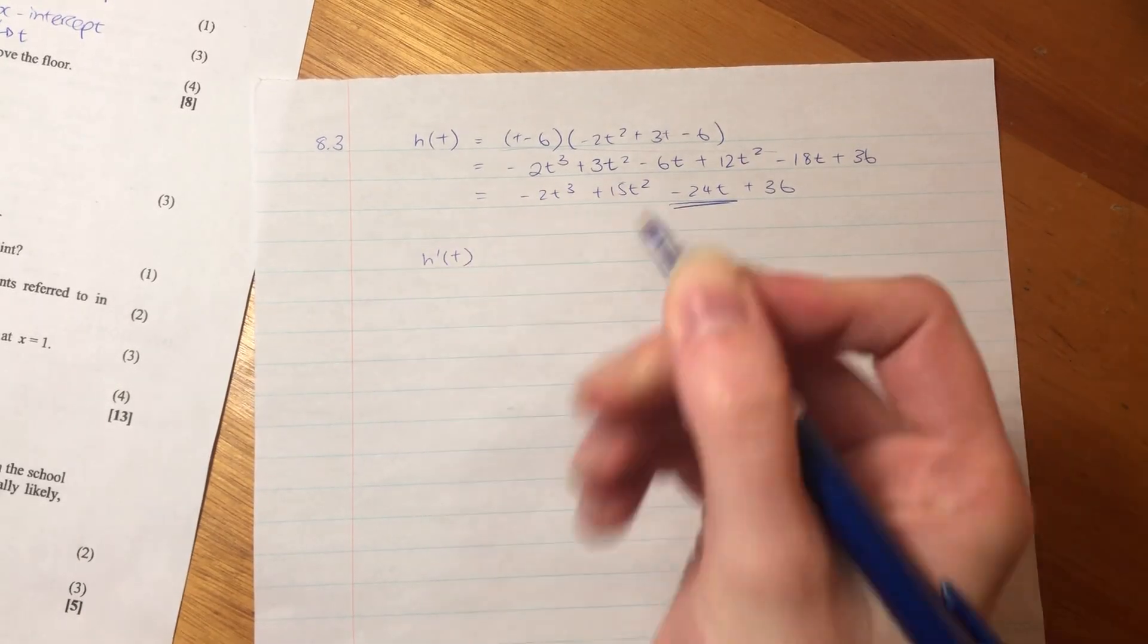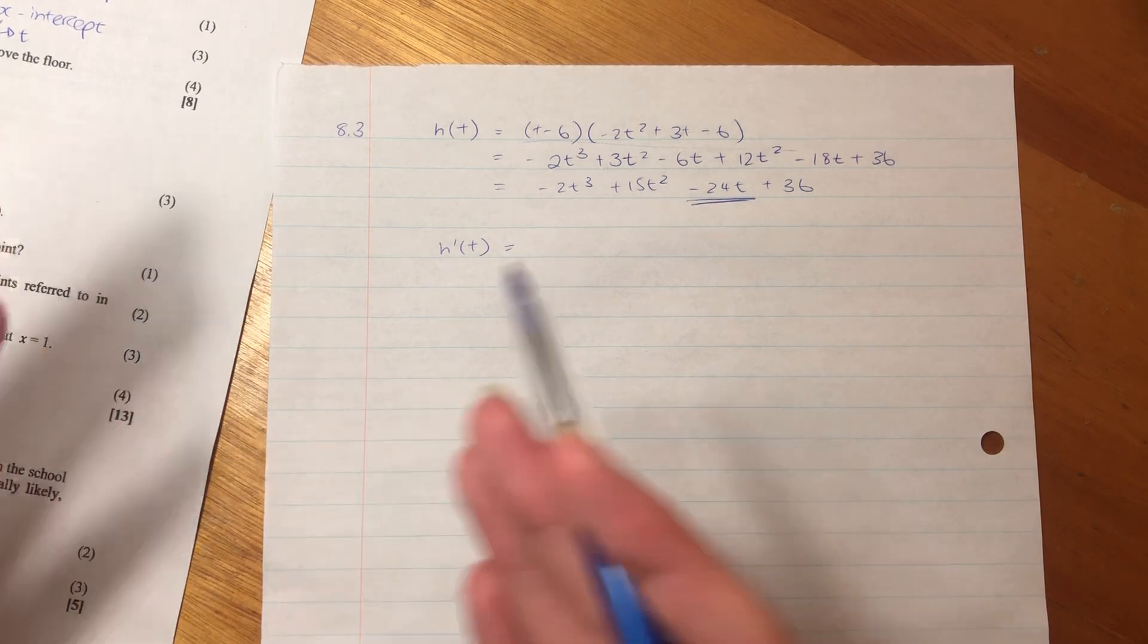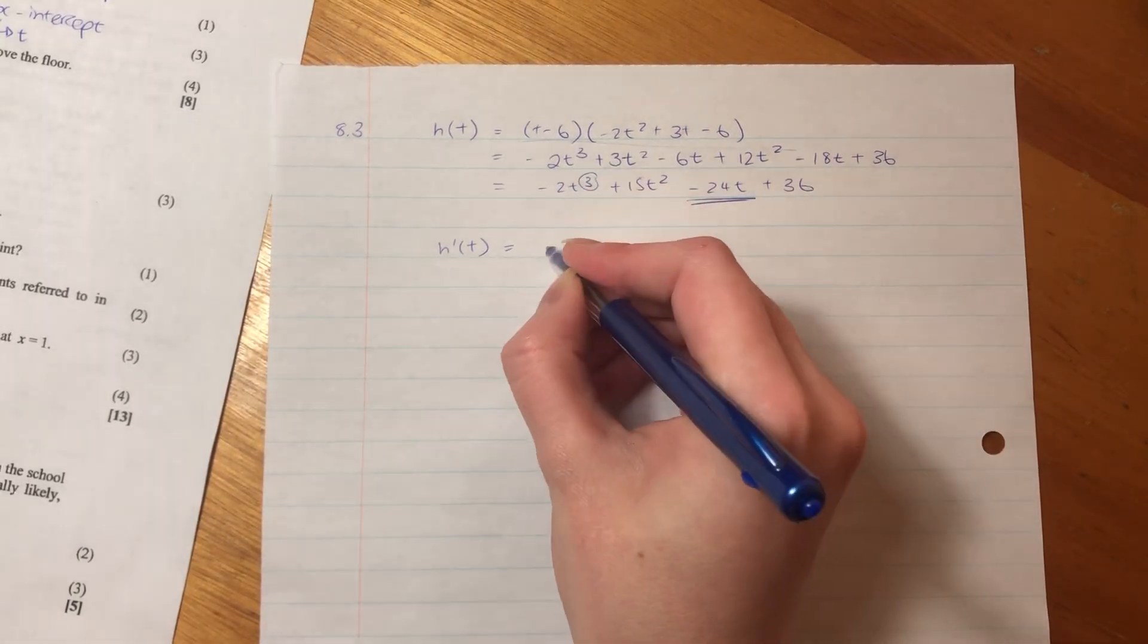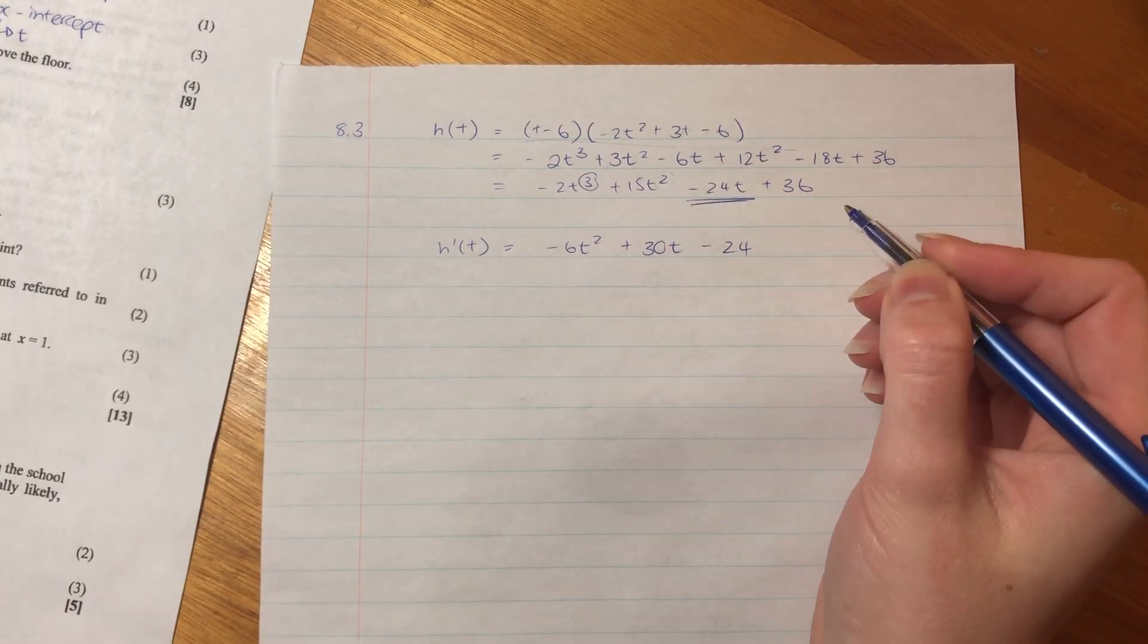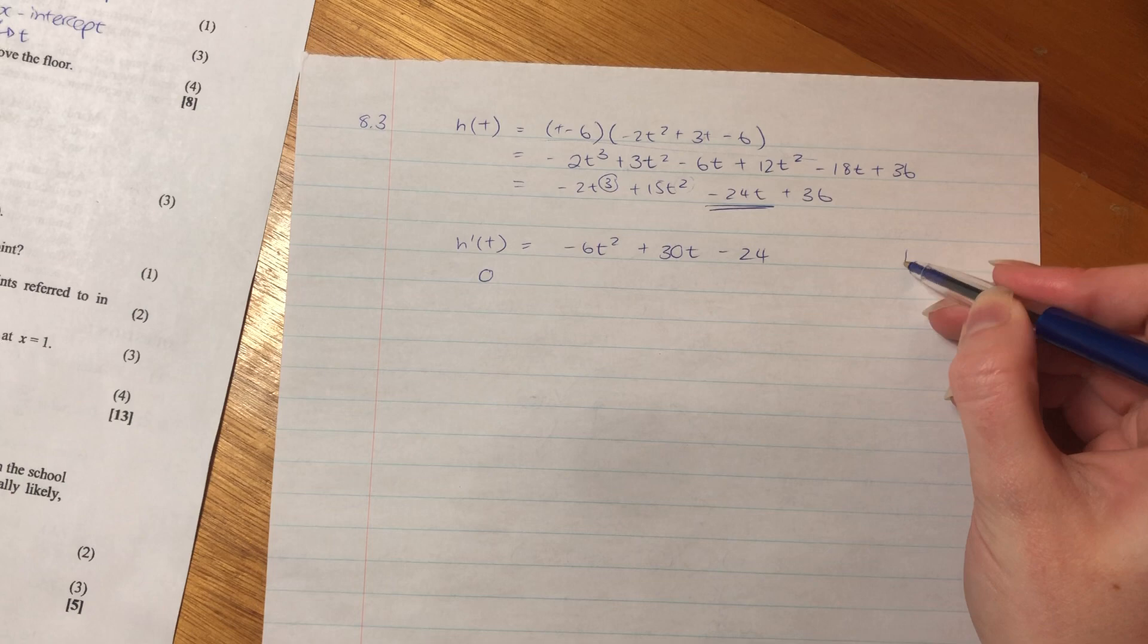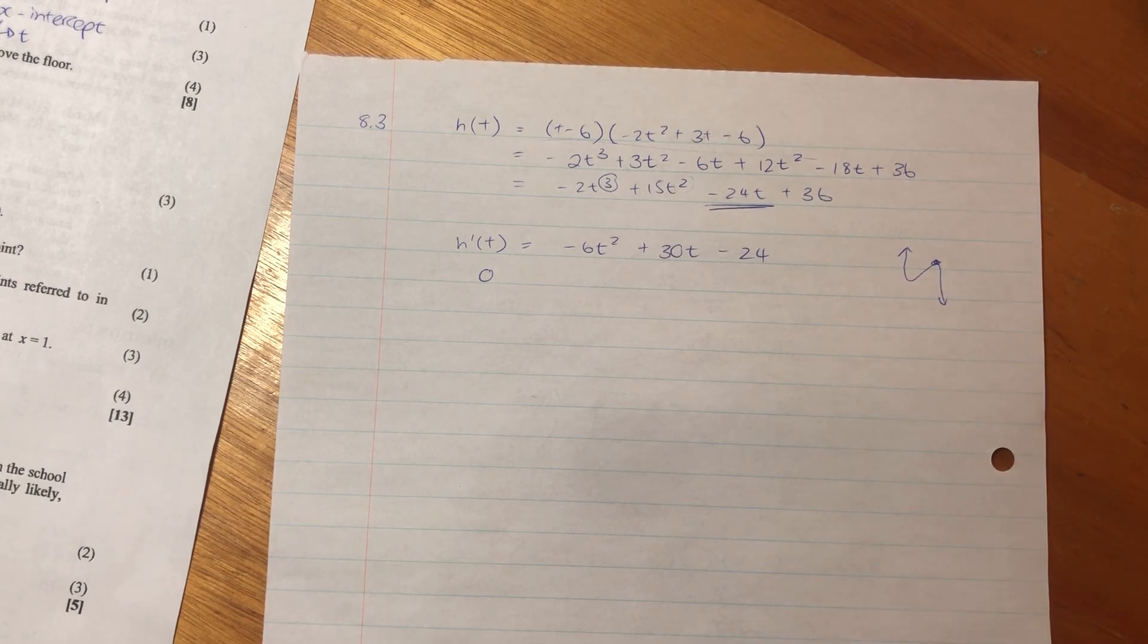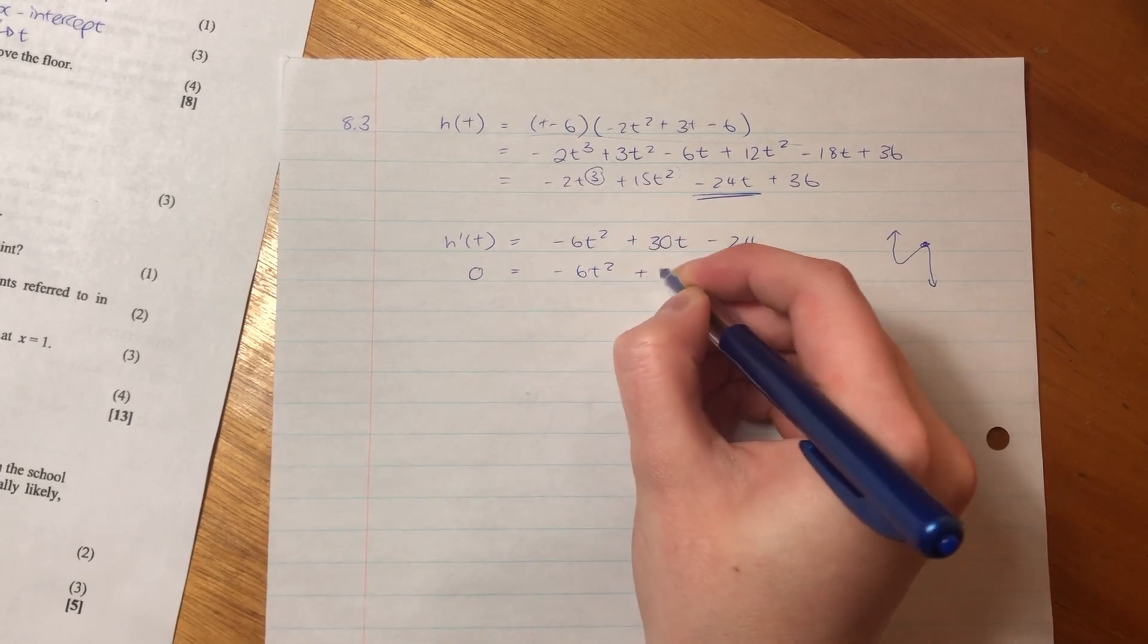So now that we have that written out, it's easy to get the derivative. So h dash of t. Remember, notation is important here. You can't just say ht because it's not the same. The derivative is not the same as the equation. We're getting the gradient of the equation, not just the equation. So remember, when we get the derivative, we always take the exponent, we bring it down, we multiply, and then we subtract 1 from the exponent power. So that is negative 6t squared plus 30t minus 24.